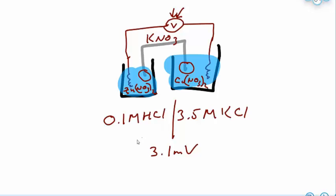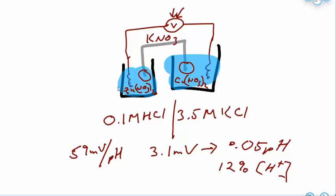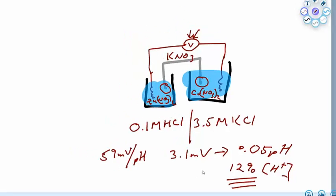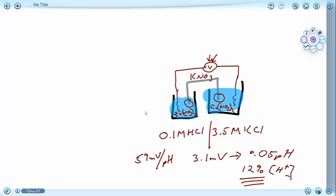If we are measuring the pH of the solution and maybe there's a junction potential of 3.1 millivolts because of the internal solution of the pH electrode, it has a pH response of 59.9 millivolts per pH unit. This 3.1 millivolts is going to result in an error of 0.05 pH units or about 12% of the hydrogen ion concentration. So we do need to be careful or be aware of junction potentials because they can contribute a significant amount of error to the observed measurement.